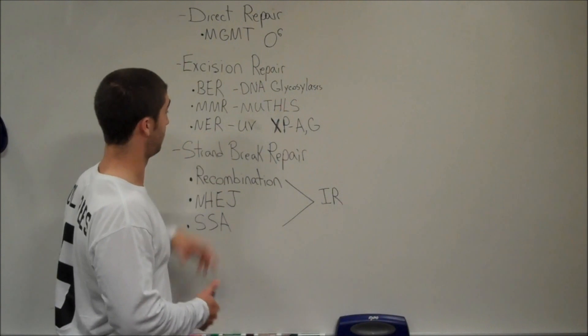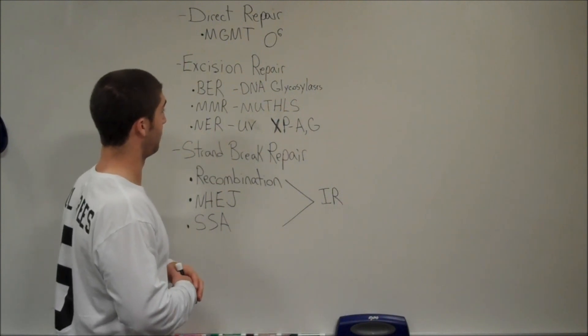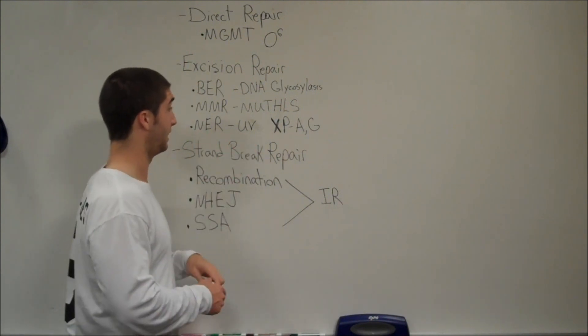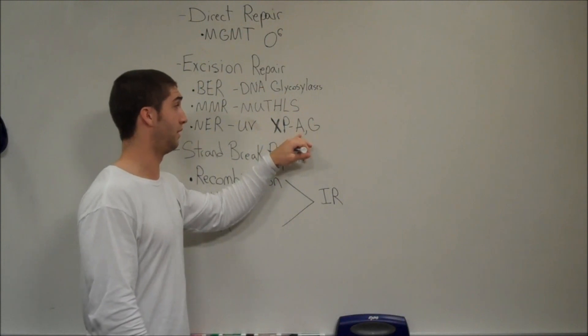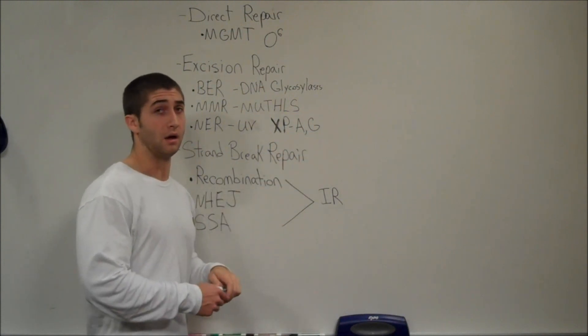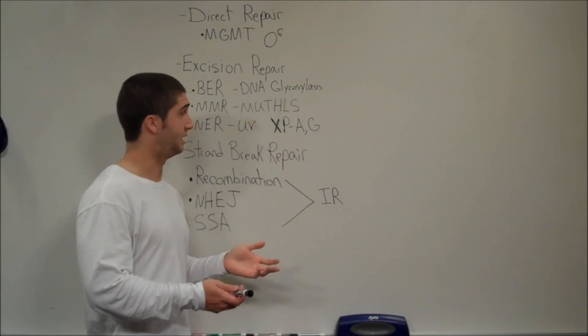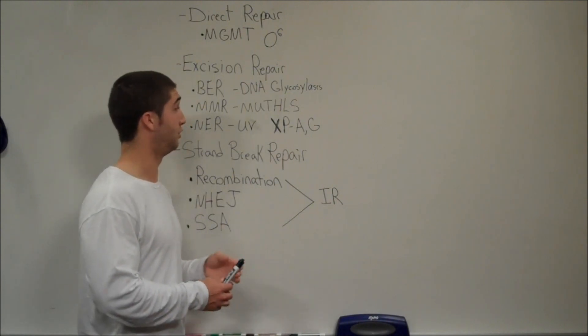Nucleotide excision repair pathway is going to repair more extensive DNA damage due to UV radiation. And it does it by using these proteins called XP, and they range all the way from A to G. So you have XPA, BCD, EFG, and they all do different things.